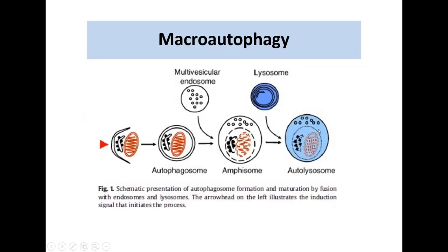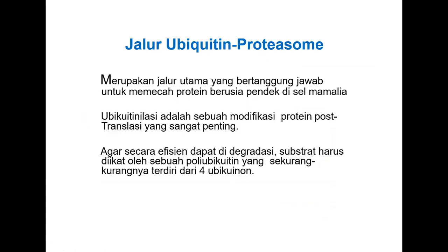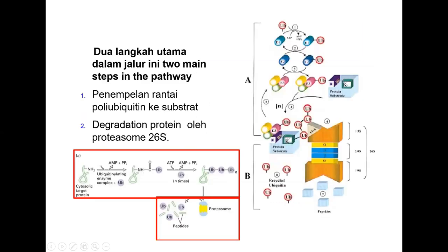Satu lagi sistem degradasi adalah sistem kalpain. Jalur ubiquitin-proteasom ini bertanggung jawab mencerna protein berusia pendek dan protein kecil—bukan organel besar. Agar degradasi dapat terjadi, substrat harus diikat minimal 4 ubiquitin. Enzim pada ubiquitin ada E1 (ubiquitin activating enzyme, di nukleus dan sitosol), E2, E3, dan E4 yang mengenali dan menarik protein rusak ke dalam proteasom. Proteasom berbentuk seperti toples dengan enzim protease di dalamnya, mencerna protein yang dibawa ubiquitin menjadi peptida-peptida pendek atau asam amino tunggal. Ubiquitin tidak ikut terpotong.